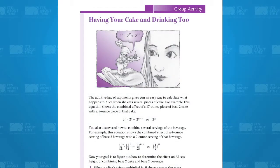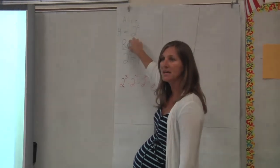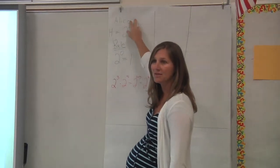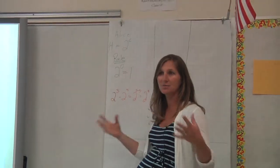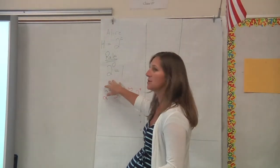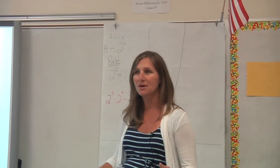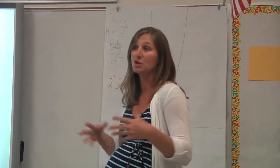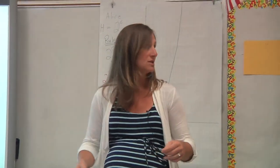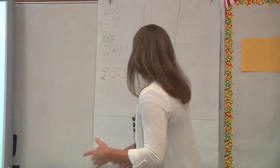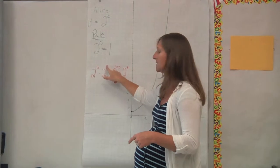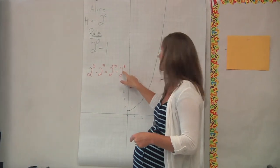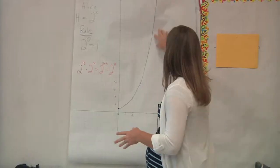Throughout the unit so far, we've taken a look at Alice's height in terms of a base of two — the number of ounces of cake she eats doubles her height. We understand that 2 to the 0 equals 1, so Alice's height gets multiplied by 1. The other piece we developed is the additive law: if we have the same base with different exponents, we can just add the exponents to get a new resulting power.